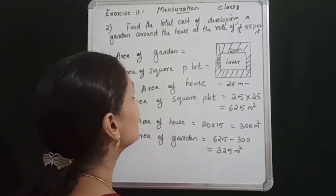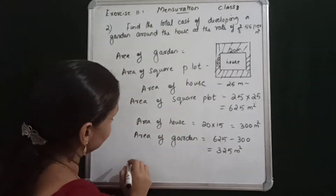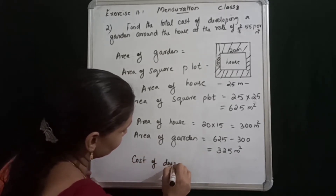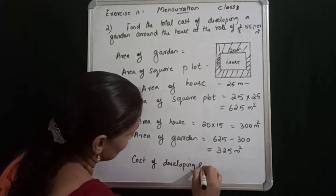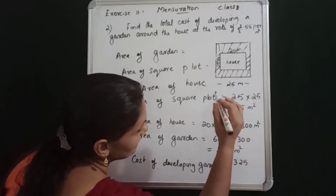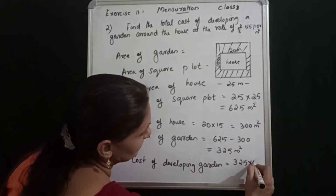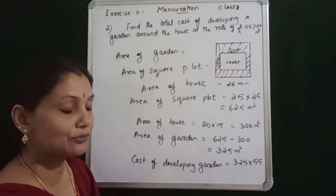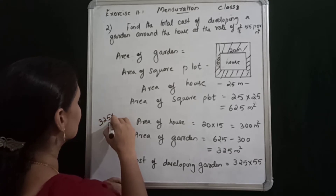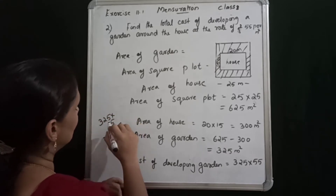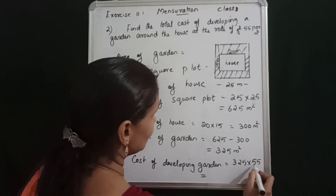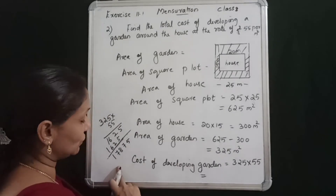The total cost must be calculated. Cost of developing the garden: garden area is 325 meter square, and 1 meter square costs 55 rupees, so 325 into 55.